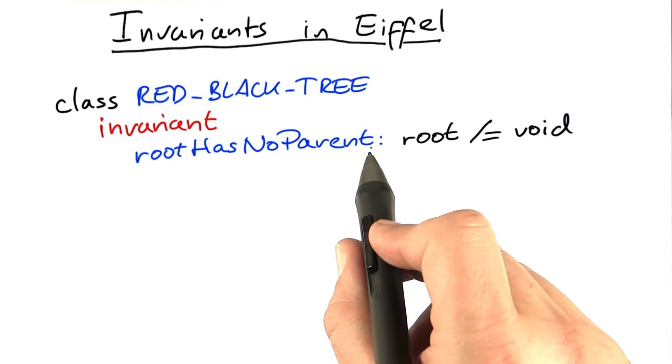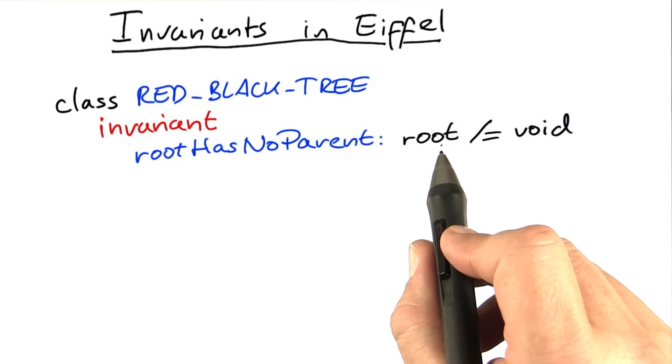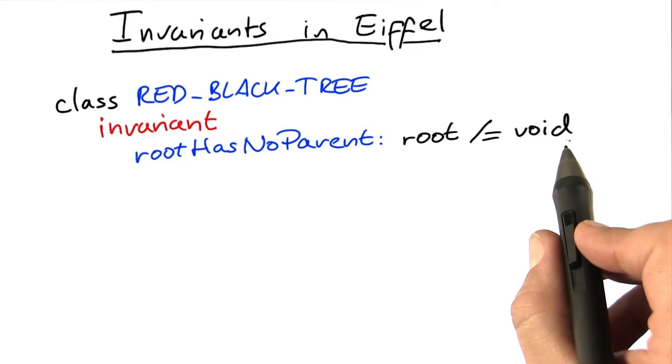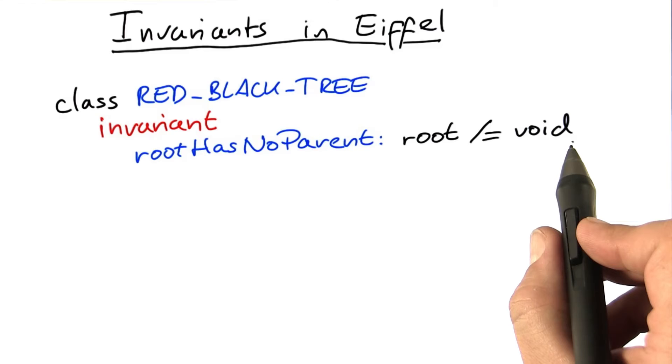Here we have 'root has no parent', and what this does is simply checks whether root attribute is a valid pointer, that is, it's not a void pointer. This is unequal in Eiffel, and this is what in other languages is called a null pointer.